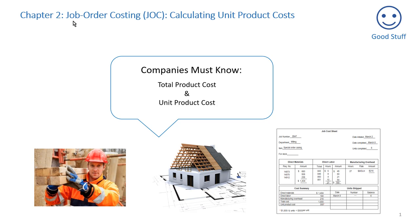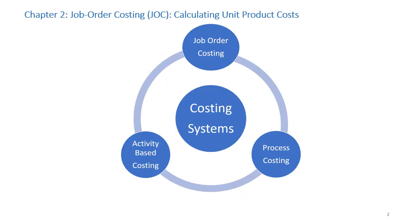The focus of this chapter is on calculating unit product costs. All manufacturing companies need to know both the total cost of production and the unit product cost. During the semester, we will study three costing systems which provide management with this type of information: job order costing, process costing, and activity-based costing.